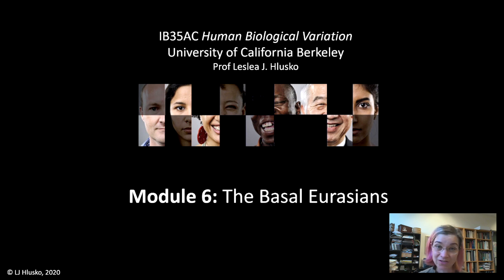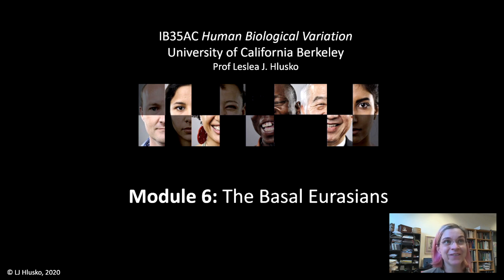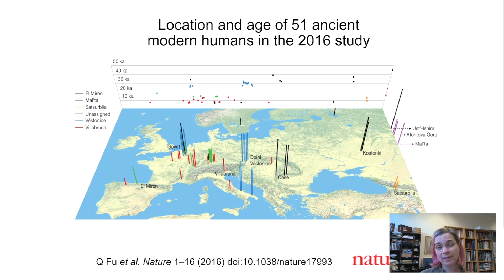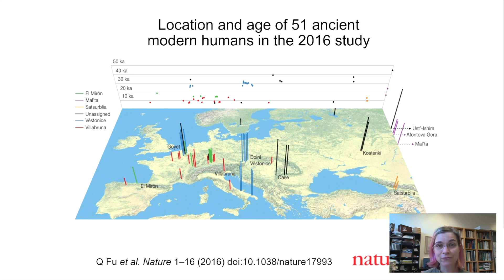Welcome to the second video of module six on the Basal Eurasians. We talked in the last video about climate change and how that came into play, so keep that in mind as we start our journey for this video. I'm going to be focusing on a couple of different studies. What we're going to be talking about now are results from a paper published in 2016 about ancient DNA from 51 ancient modern humans.